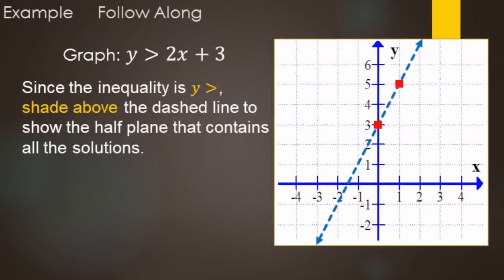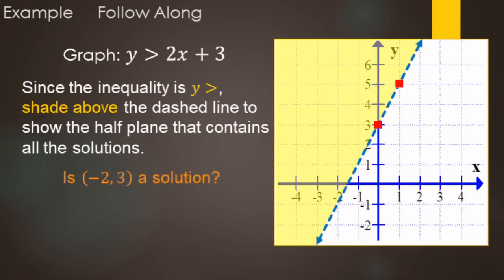Now that we have our boundary line, we get ready to shade. Since it's y is greater than, we shade above the line. The shaded area contains all the solution coordinates. Points on the line are not solutions because it's dashed, and anything on the other side is not a solution. Is (-2, 3) a solution? Negative 2, 3 is in the shaded area, so yes, it is a solution. What about (3, 1)? That point is not in the shaded area, so no, not a solution.